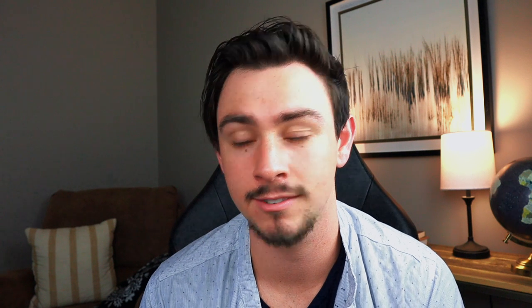Now let's look at a question from the IFD MCAT guide that shows what it looks like when the AAMC tests math associated with Michaelis-Menten kinetics. The question reads: in your summer research lab, you were asked to find why the drug your group is developing is functioning sub-optimally. You note the drug only contains 3.75 moles of active substrate. Previous tests have identified Vmax as 100 moles per second. Given the Michaelis-Menten plot below, at what percentage of its capability is the drug functioning?